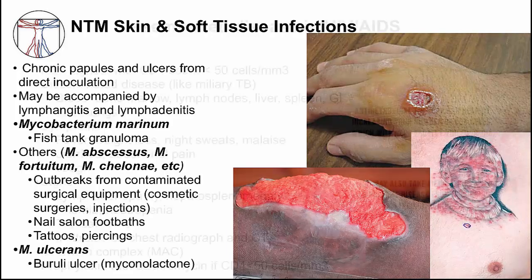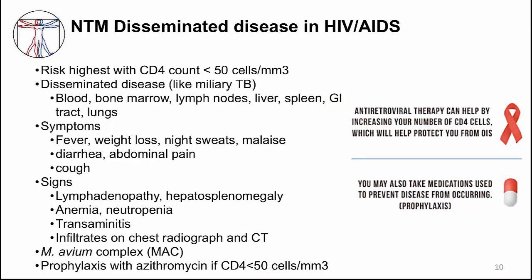Mycobacterium avium complex, or MAC, is one of the most important NTMs to remember. MAC is a causative agent for severe disseminated disease seen in patients with advanced AIDS who have CD4 counts of less than 50 cells per cubic millimeter. Signs and symptoms relate to the locations of dissemination — for example, fever, weight loss, night sweats, and malaise result from bacteremia; cough from pulmonary infection; and diarrhea from infection of the gastrointestinal tract. Prior to antiretroviral medications, MAC infection caused many deaths in people with advanced AIDS. To prevent this, infected patients are given prophylaxis when their CD4 count is less than 50 cells per cubic millimeter.